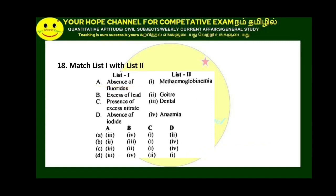In a list-to-match question: absence of fluoride causes dental cavity; excess of lead causes anaemia; presence of excess nitrate causes methaemoglobinaemia or Blue Baby Syndrome; absence of iodine — adding iodine to salt prevents iodine deficiency problems. The answer is option A.